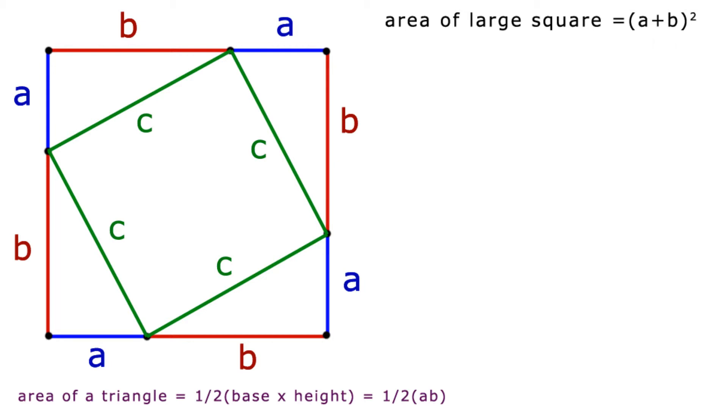So four of them, four of the triangles make up an area of 2AB since four halves make 2. I've put a little note to this effect on the bottom of the screen.